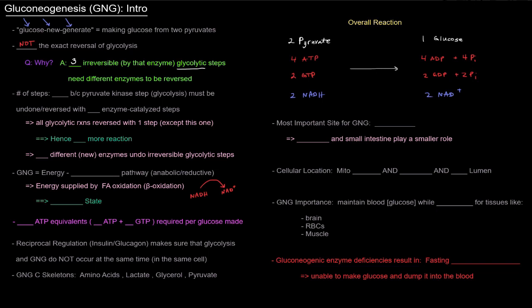We need different enzymes in order to reverse those steps. So how many steps are there in gluconeogenesis? Because in glycolysis there were 10. Well, in gluconeogenesis there's actually 11, and that's because the step catalyzed by pyruvate kinase in glycolysis must be undone or reversed with two enzyme-catalyzed steps.